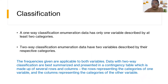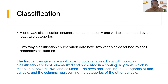What is one-way and two-way classification? One-way classification is enumeration data which has only one variable described by at least two categories. While on the other hand, two-way classification enumeration data have two variables described by their respective categories.